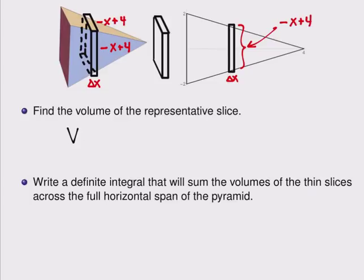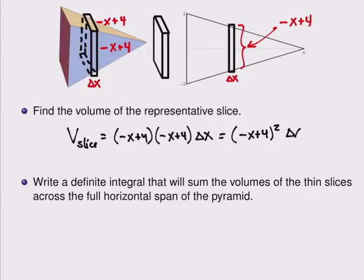And so I can say the volume of a slice is one of the sides times the other side times its thickness, delta x. And that simplifies down nicely to negative x plus 4 quantity squared times delta x.